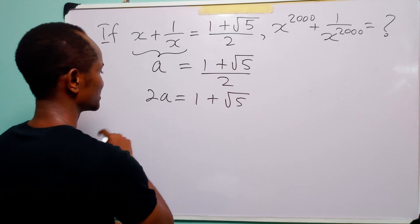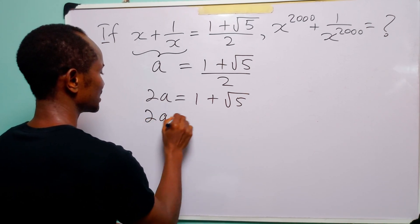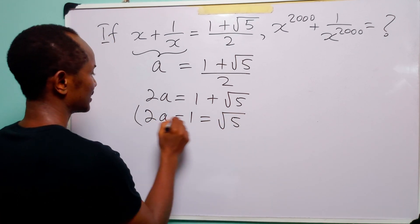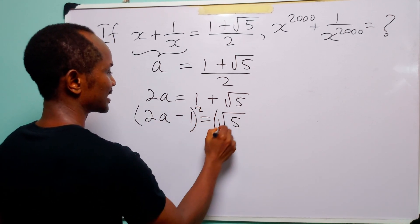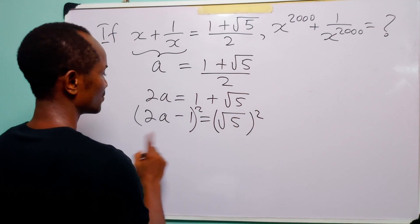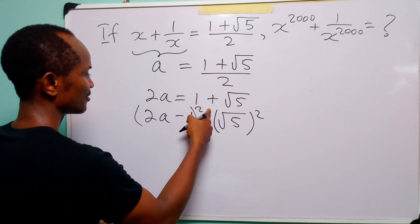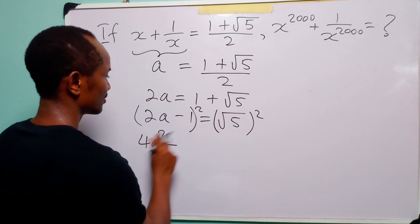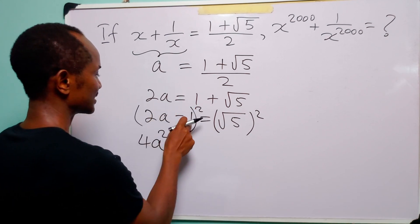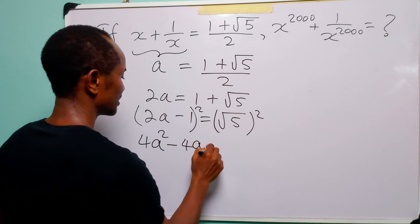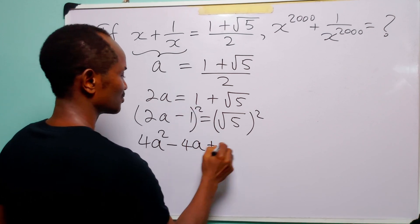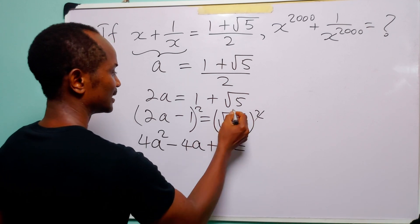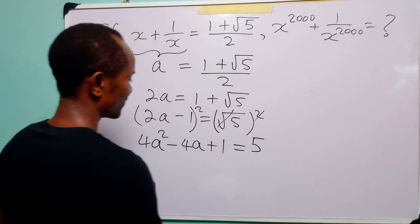Subtracting 1 from both sides of this equation, we have that 2A minus 1 is equal to root 5. And squaring both sides of this equation, we have (2A minus 1) squared expanded as 4A squared minus 4A plus 1, and the right-hand side squared gives us 5.